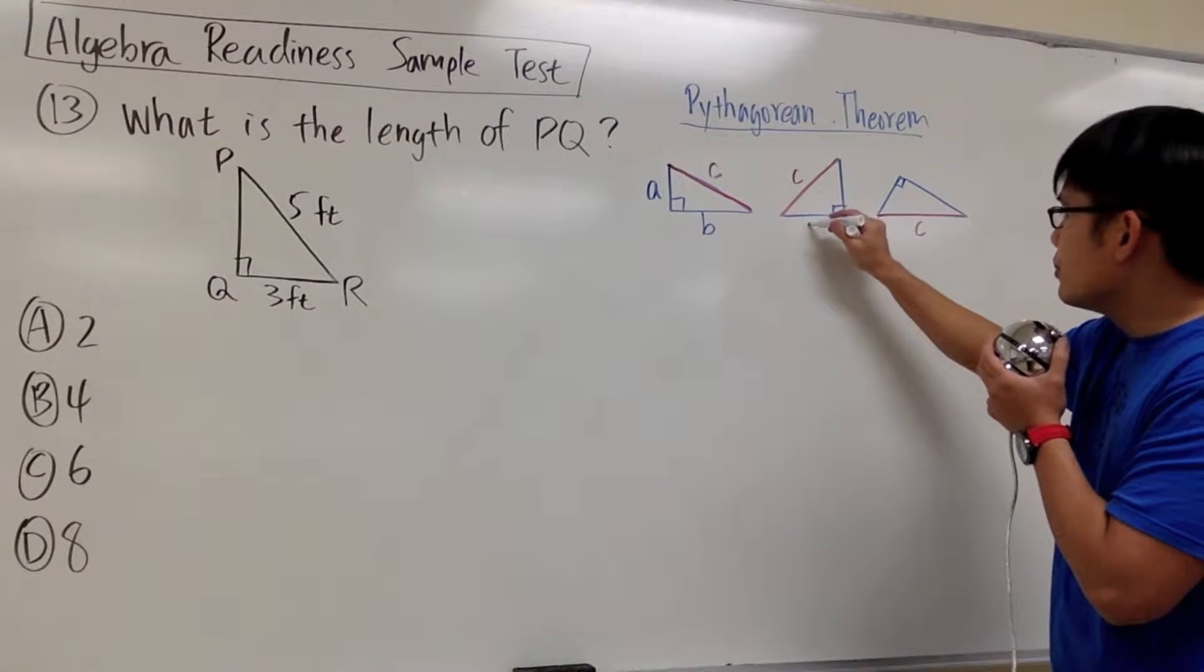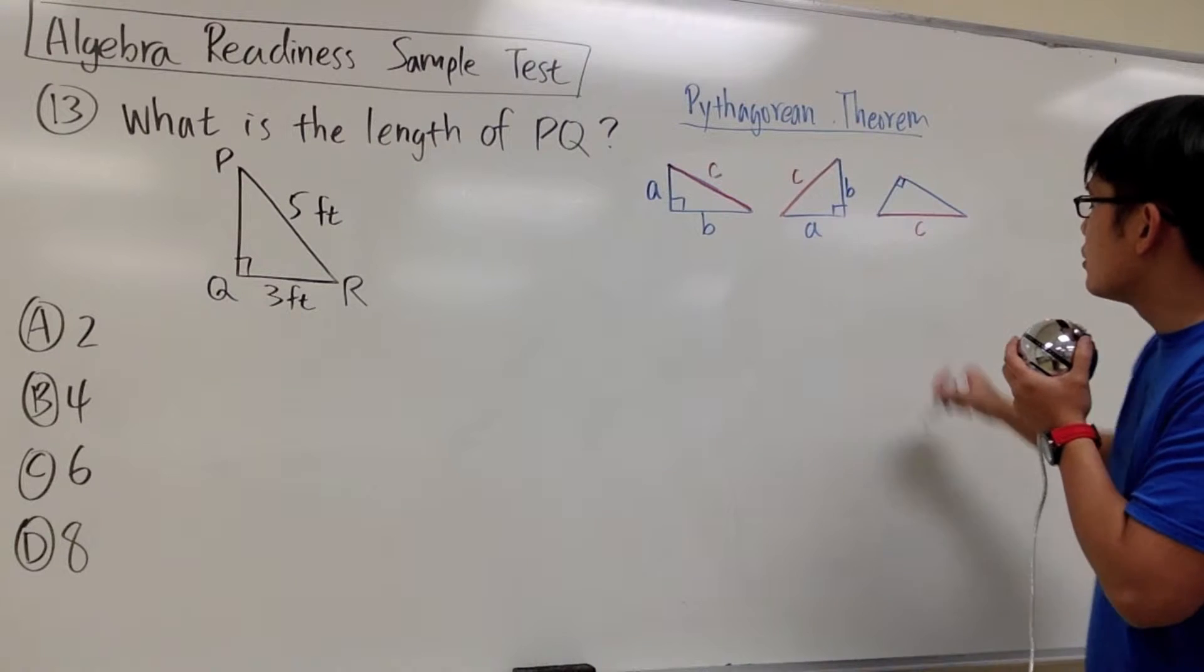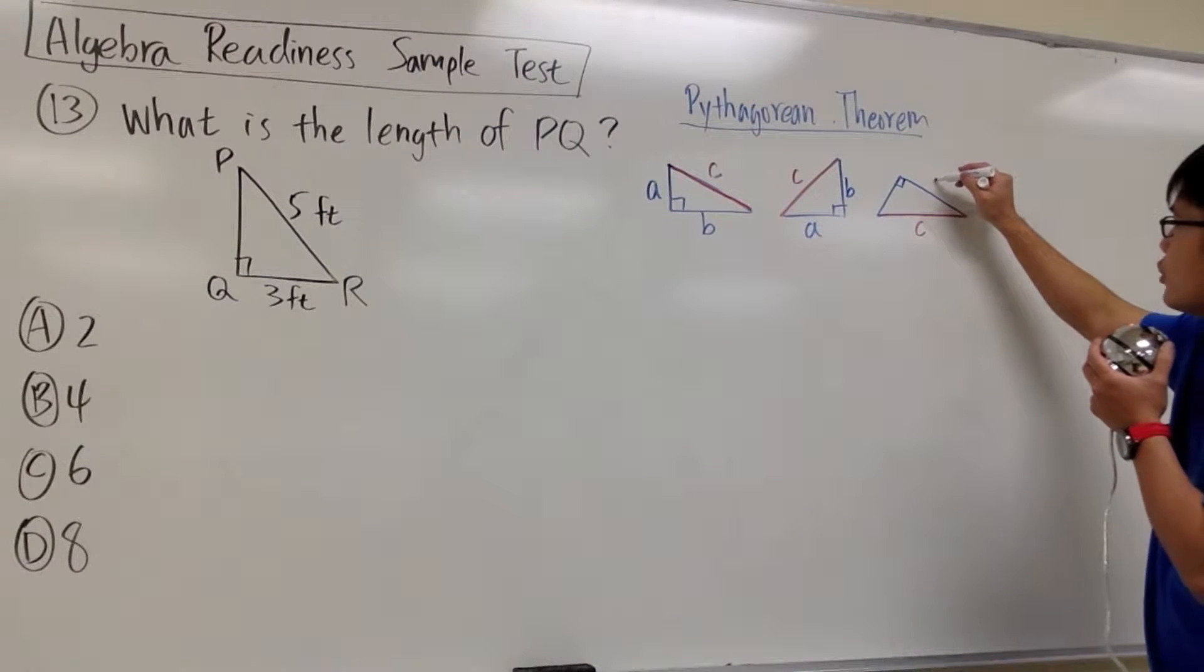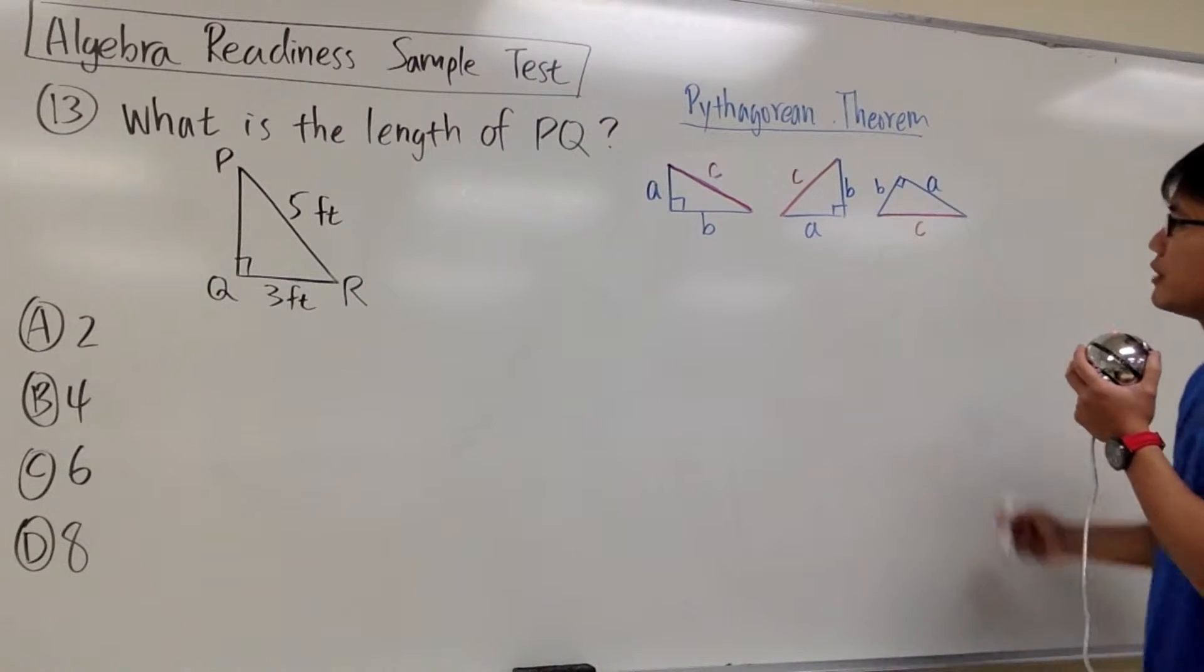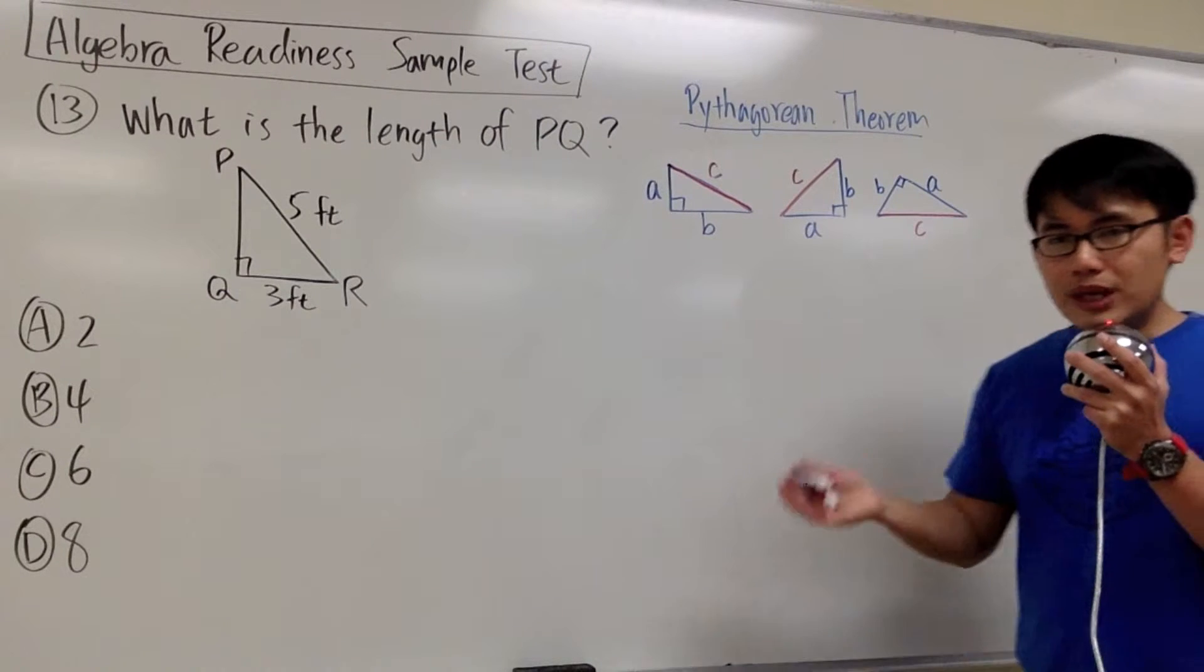For the second one, I'm just going to put down A right here and B right here, and for the third one, I'm going to put down A right here and B right here. Now we have the labeling.